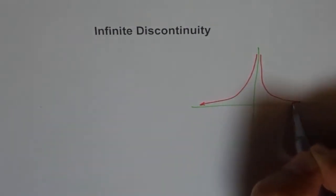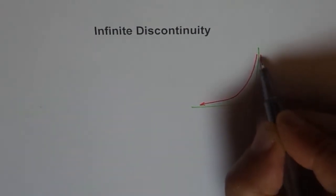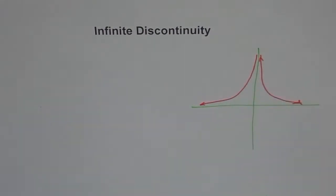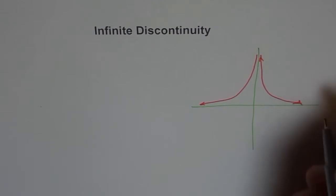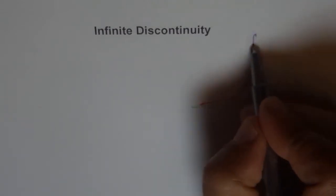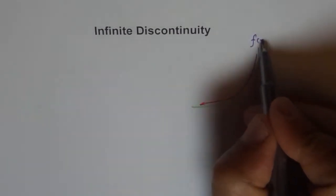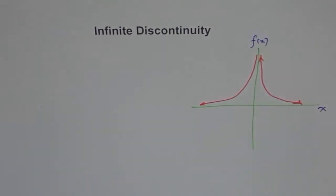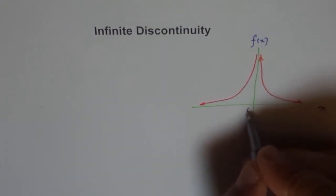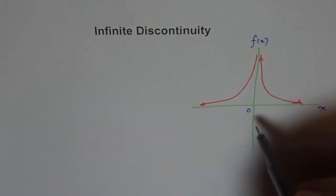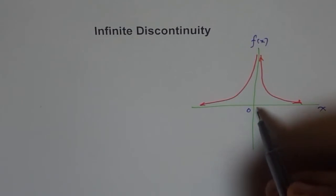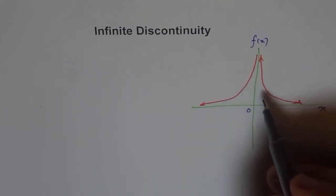Can you tell me which function's graph will be kind of like this? Think about it — this graph could be of which type of function. f(x) should be, or could be, what in this case? Well, this function is clearly discontinuous at x equals 0, and is positive on both sides.